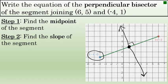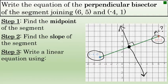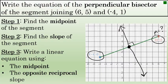We'll find the slope of the segment whose endpoints are negative 4, 1 and 6, 5 in this example. We'll find that slope, and then using that slope and the midpoint, we'll be able to write the equation of the perpendicular bisector in step 3 by using the midpoint — a point on the perpendicular bisector — and then the opposite reciprocal of the slope of the line segment, because perpendicular lines have opposite reciprocal slopes.